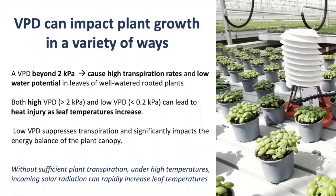So now let's make a summary. VPD is very important in greenhouses and indoor systems. High VPD levels above 2 kPa can cause high transpiration rates and low water potential in leaves. Both high and low VPD levels can lead to heat injury because leaf temperature will increase. Low VPD can suppress transpiration, impacting energy balance and nutrient uptake in passive nutrients like calcium. Less transpiration will be equal to a rapid increase in leaf temperature. VPD can be a very useful tool in growing systems, and there are also sensors you can use to monitor this variable directly in greenhouses.